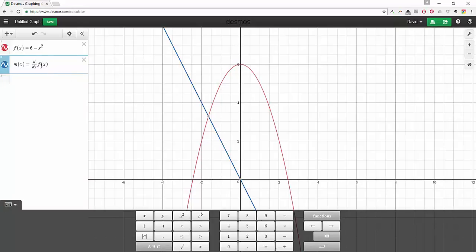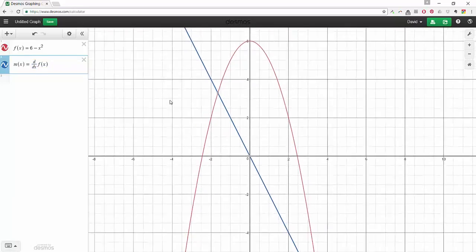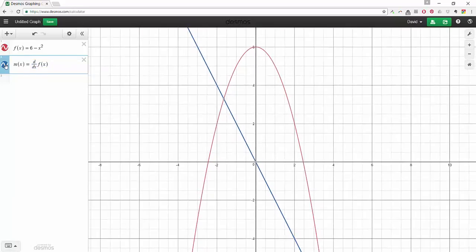I mean, I know, of course, you could just algebraically find the derivative of f and write negative 2x, and that would be fine. I just want to show you that this is possible. Okay, so there's the derivative, but I don't actually want to display the derivative at all.